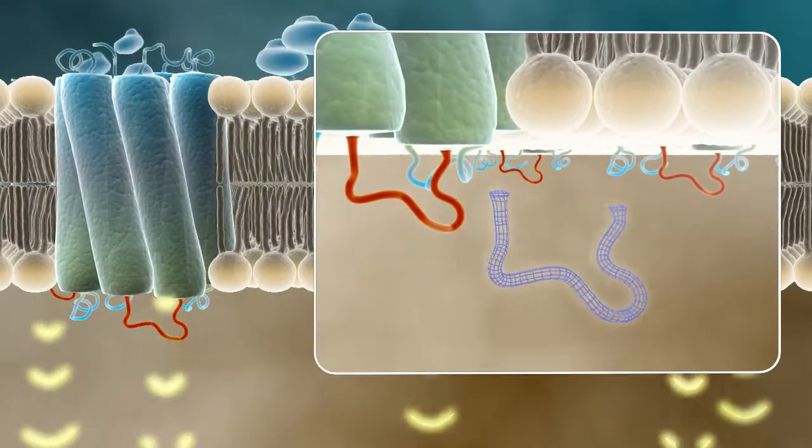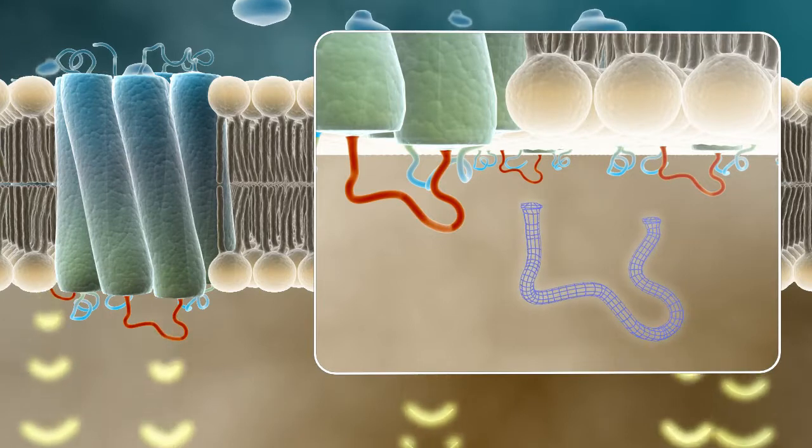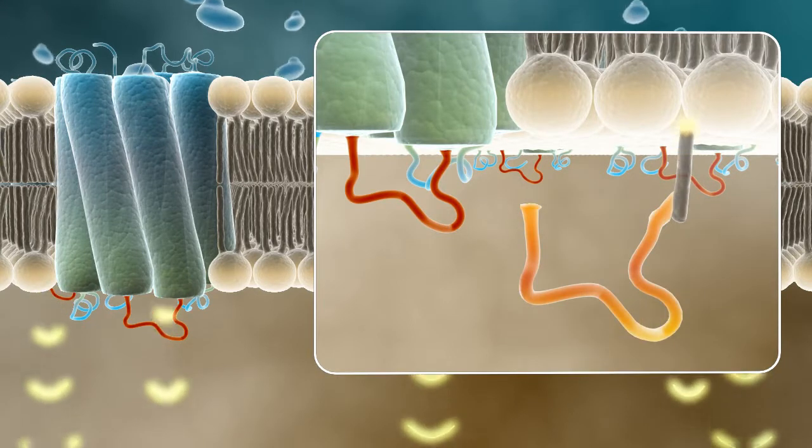Pepducens consist of a peptide modeled on one of the intracellular loops of the target GPCR, plus a lipid tail.